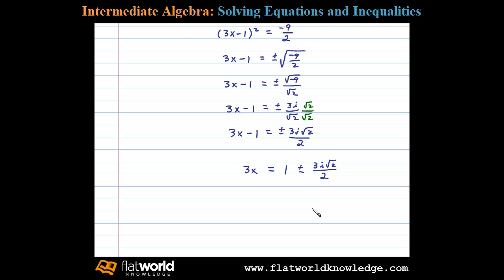And then at this point we would divide both sides by 3, or equivalently we could multiply both sides by 1 third. 1 third times 3x leaves us with x, and then on the right side here we would distribute 1 third. 1 third times 1 is 1 third plus or minus 1 third times this term. You can see the 3's canceling, and that'll leave us with i times the square root of 2 over 2.